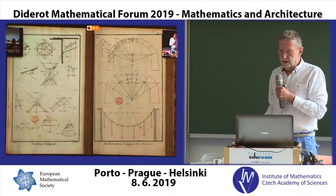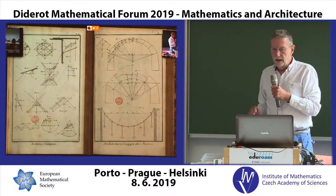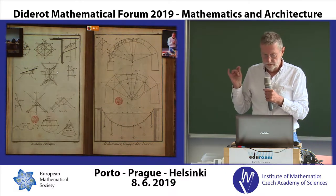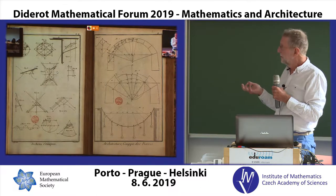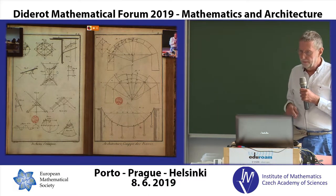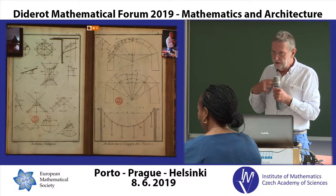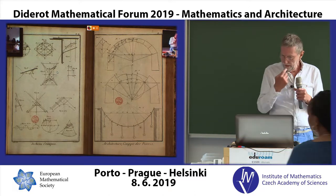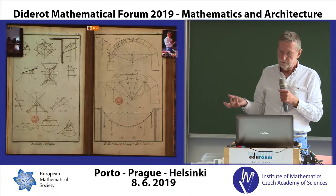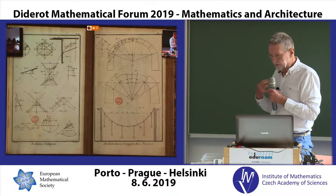This is from the Encyclopedia by Diderot and D'Alembert, and it shows on the left conic sections — the shapes that you get when you cut through a cone. The picture on the right is partly geometrical and partly structural. As a civil engineer, I'm very interested in the relationship between geometry and structure, and that's how mathematics comes into engineering, as far as my work is concerned.